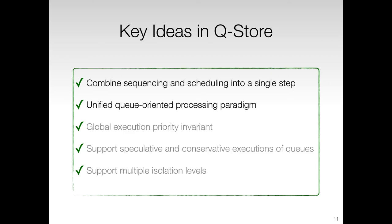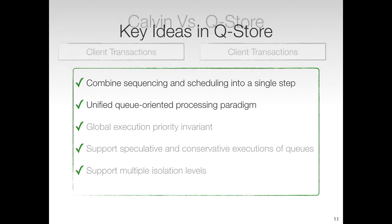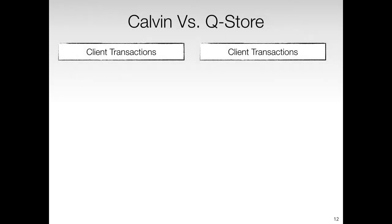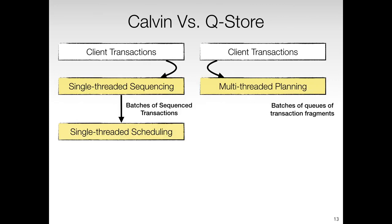In this video, we focus on the first two ideas. To illustrate the first idea, let us look at a high-level comparison between Calvin and Q-Store. On the left side is Calvin and on the right side is Q-Store. Q-Store uses a single pre-execution planning phase. In this phase, queues of transaction fragments are produced instead of batches of sequence transactions. Furthermore, the queues inherit the priority attribute of their planning threads. These priorities are used to enforce ordering among queues produced by different planning threads.